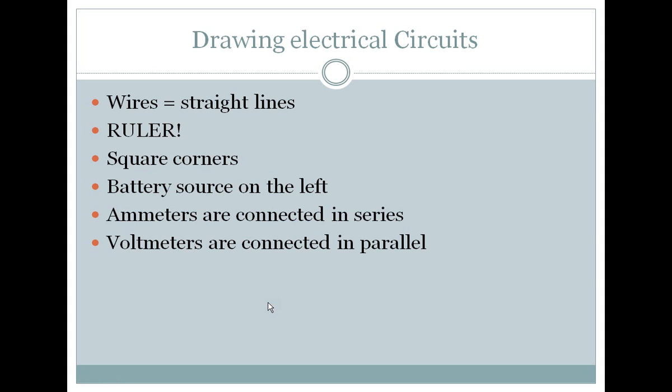Now when we're drawing electrical circuits, there are a couple things you need to remember. Wires are all straight lines - we need to be using rulers. When you're coming to a corner in a circuit, they need to be square corners. The battery source should always be on the left-hand side, ammeters are connected in series, and voltmeters are connected in parallel. Now those last two points probably don't make a whole lot of sense right now, but we'll get to them tomorrow.